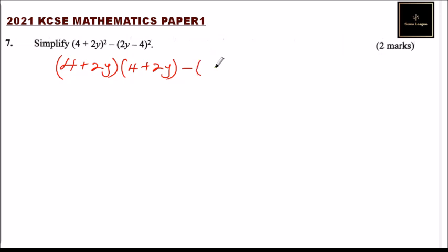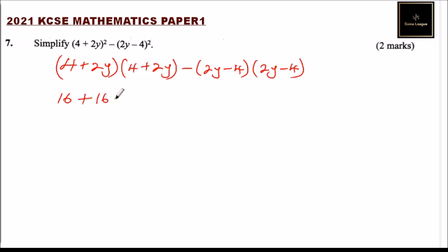Expanding the first bracket: 4 times 4 is 16, 4 times 2y is 8y, and 2y times 4 also gives 8y, so that will give us 16y combined. Then 2y multiplied by 2y gives us 4y squared. So the first part gives us 4y squared plus 16y plus 16.